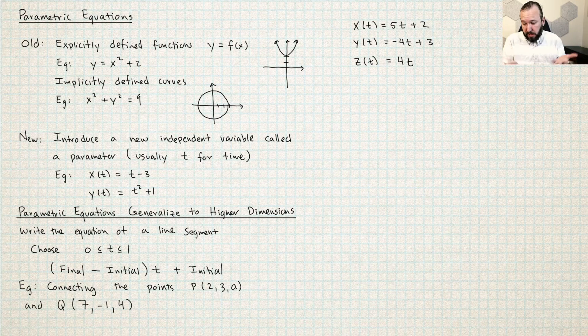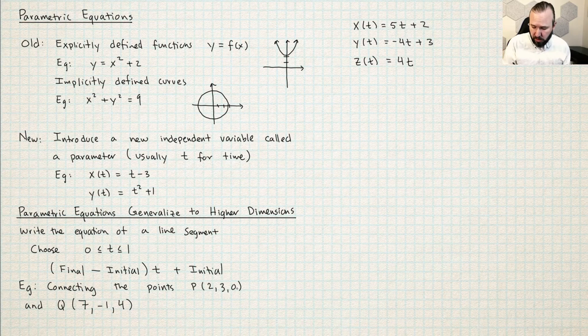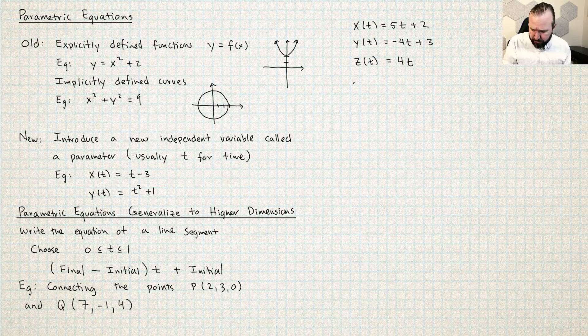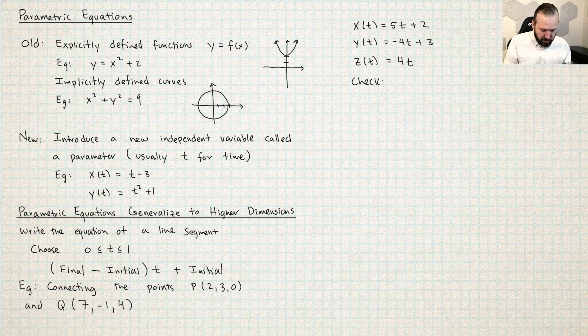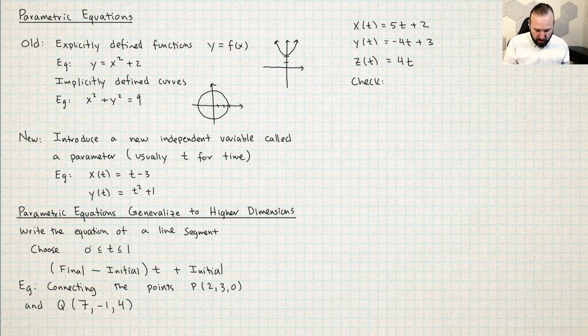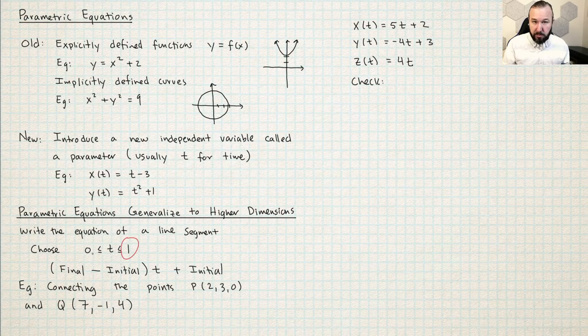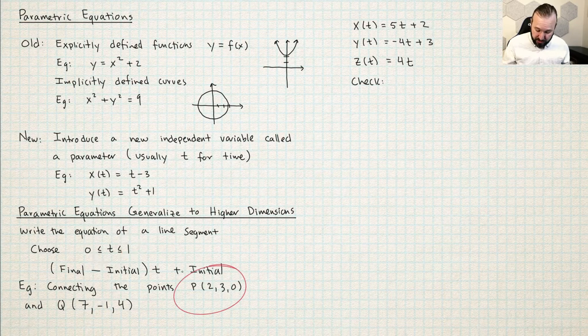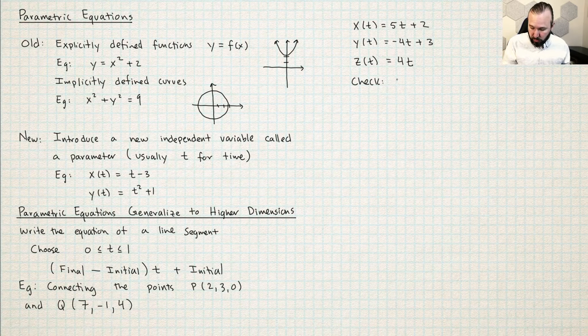So there we did it. I wrote some parametric equations using this method. Did it work? Let's check. So we chose t is in between 0 and 1. So let's plug in the initial time here t equals 0 and the final time t equals 1 and see if we did start at this point and end at that point.